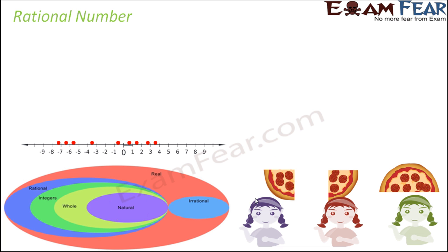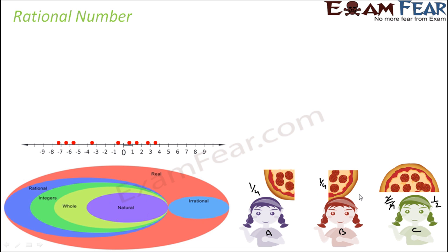If you actually calculate, let's suppose this is person A, B, and C. So lady A got one by four of the pizza, lady B got one by four of the pizza, and lady C got two by four of the pizza. Assuming there were four portions — one portion to lady A, one portion to lady B, and two portions to lady C. So one by four, one by four, and if we calculate, this is one by two. So half of the pizza is for girl C and quarter each for girl A and B.